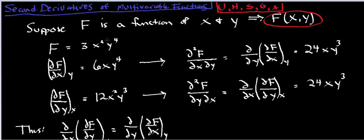We'll talk about what the implications of that are. If I take the derivative of f with respect to x, the 3 and the y to the fourth I treat as constants. The derivative of x squared is 2x, and multiplying by 3 gives 6xy to the fourth — that's the derivative with respect to x, holding y constant. I'll also take the derivative with respect to y, treating 3x squared as a constant. The derivative of y to the fourth is 4y cubed, and multiplying 4 by 3 gives 12x squared y to the third.